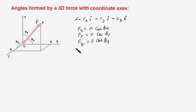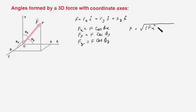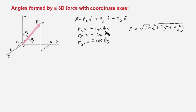These components are projections of the force vector onto the x, y, and z axes. The magnitude F is given by the square root of Fx² + Fy² + Fz². When we know a component and the magnitude of the force, we can find the directional cosines of the line of action of F. The directional cosines are cos(θx), cos(θy), and cos(θz).